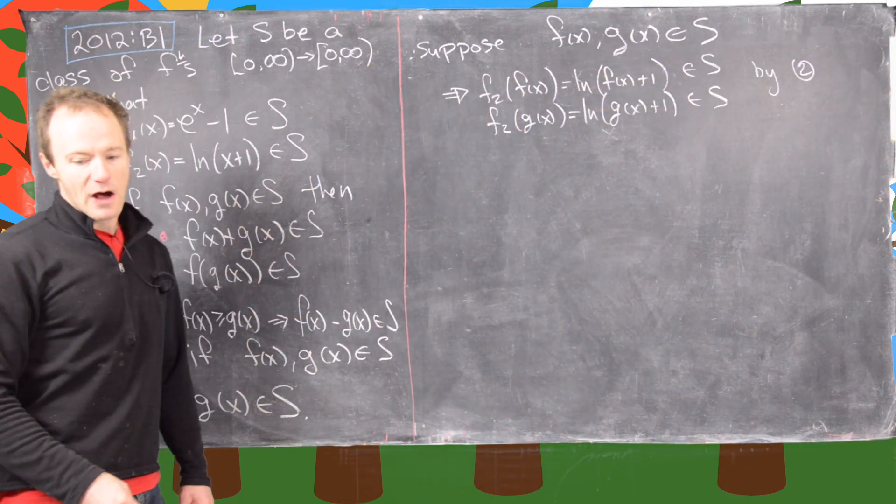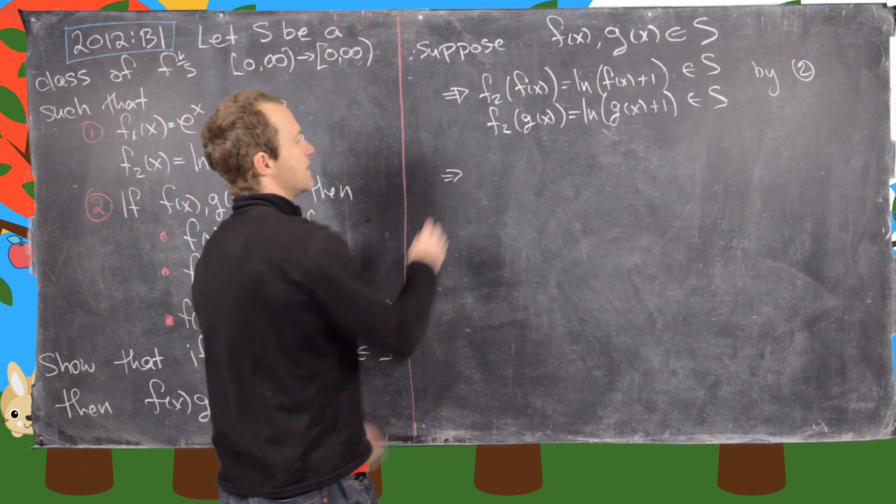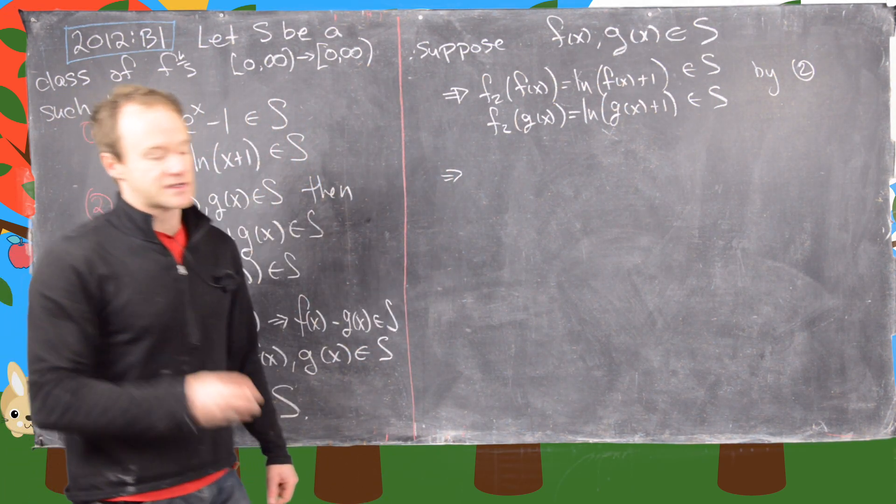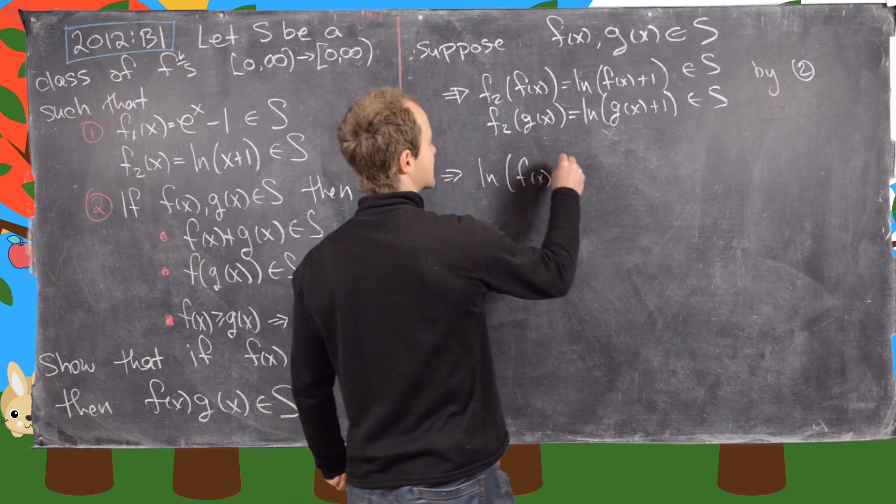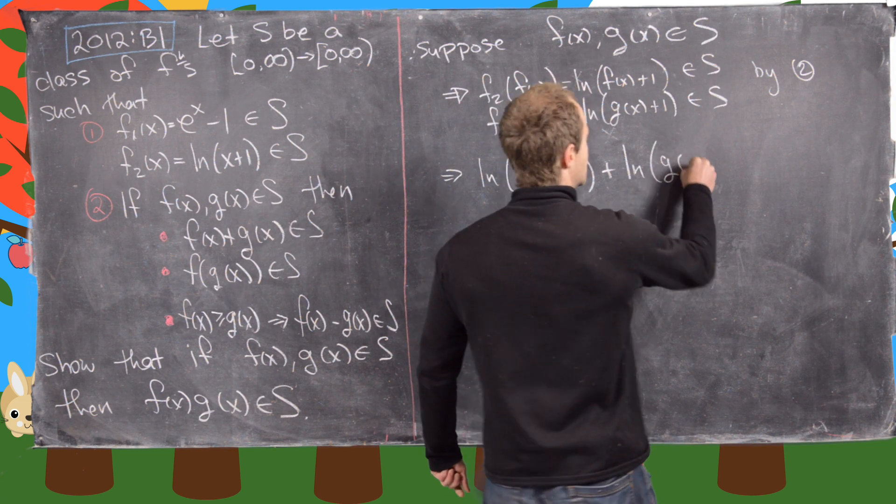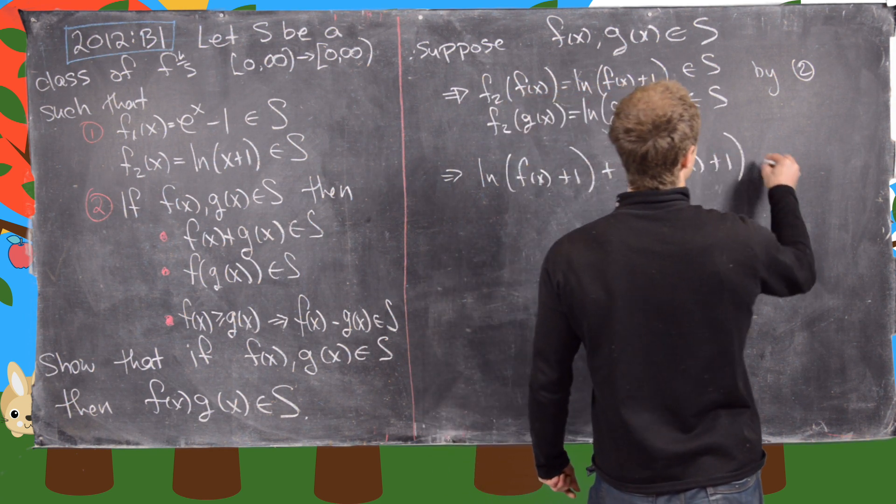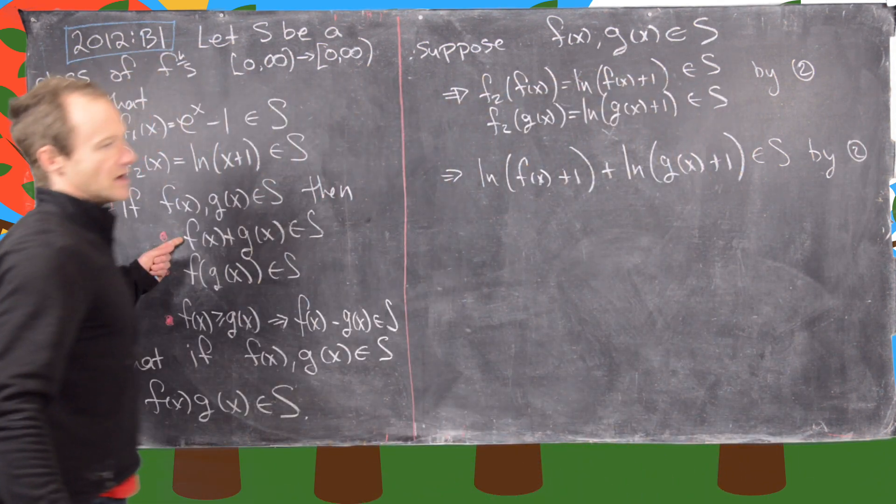But now we can apply 2 again to get the sum of these two functions is in S. So in other words, we have the natural log of f of x plus 1 plus the natural log of g of x plus 1 is in S. And then again, that's by another portion of part 2, this one right here.